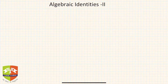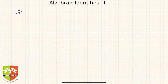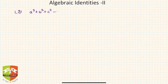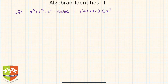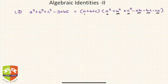The next one is identity number nine, continuing from where we left off at the eighth one. In this case, a cube plus b cube plus c cube minus 3abc can be factored into a plus b plus c, times a square plus b square plus c square minus ab minus bc minus ca. Each term in the second bracket has degree two, and the first bracket has degree one, so you get a degree three expression overall.